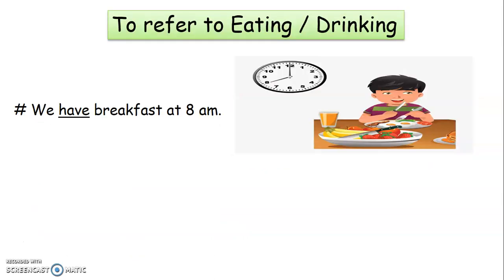Next, to refer to eating or drinking — it indicates about eating and drinking. For example, 'We have breakfast at 8 AM.' Here, 'we' is the plural pronoun, so we make use of the verb 'have'. Have indicates what a person is eating.